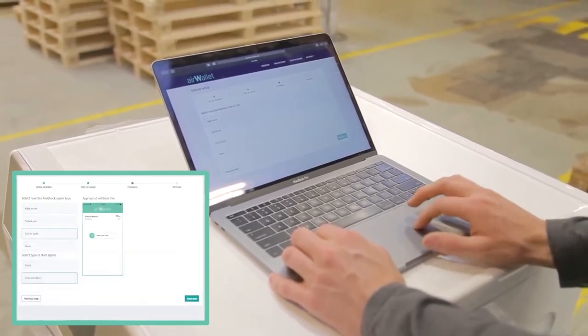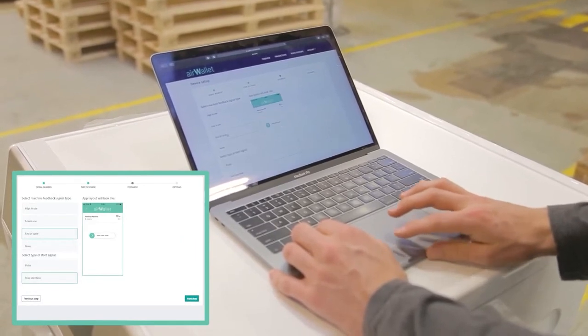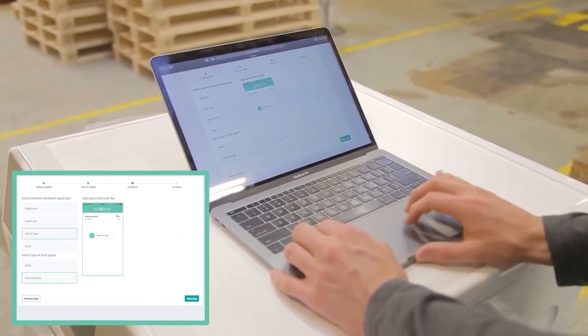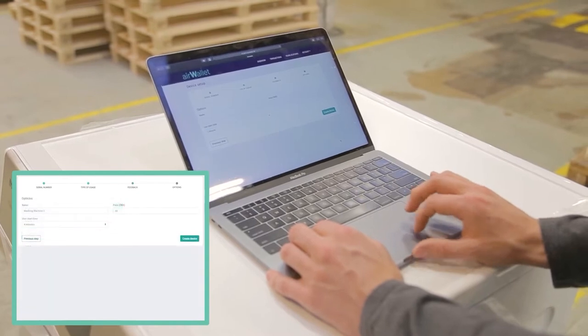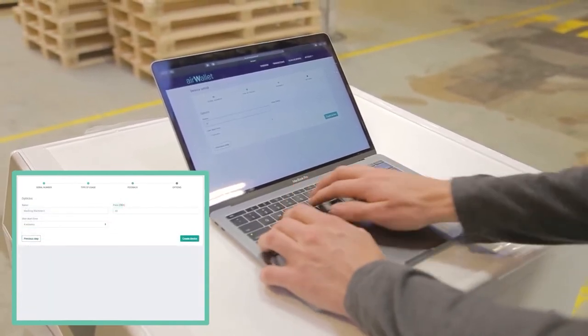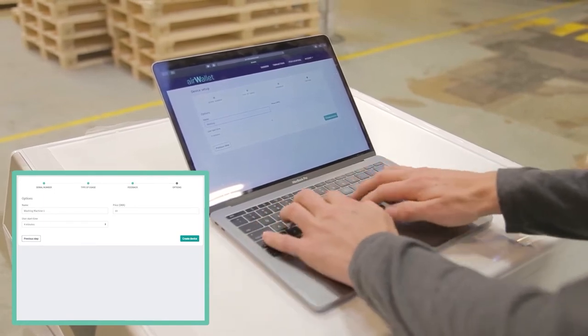For this washing machine, I chose to install AirWallet with end of cycle feedback and with the user start time as start signal. I want the user start time to be 4 minutes, so the user has 4 minutes to start the machine from when it has been purchased.